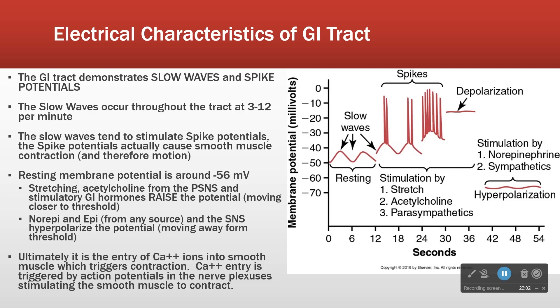In the gut, our resting membrane potential is about minus 56, which is a little higher than nerve cells typically are. This membrane potential can be adjusted up or down by a variety of effects — moved up, in other words, closer to threshold, closer to depolarization.